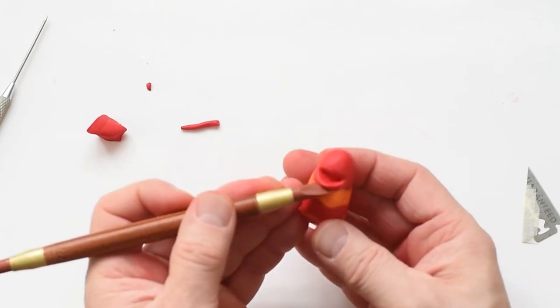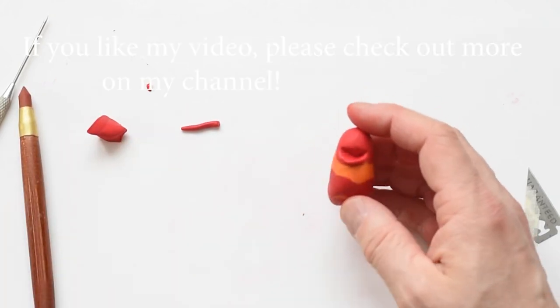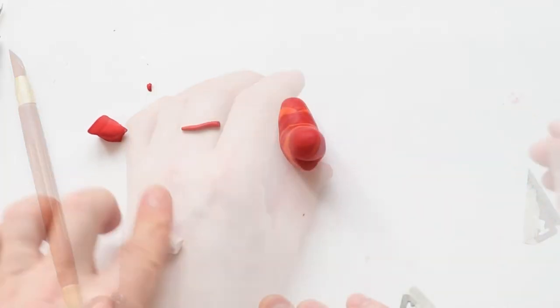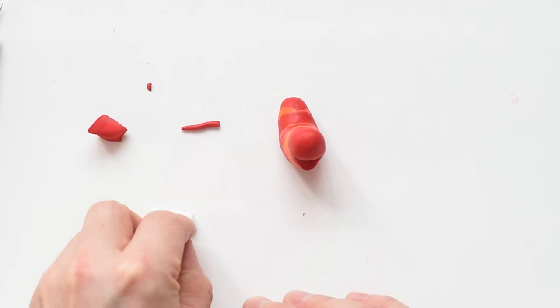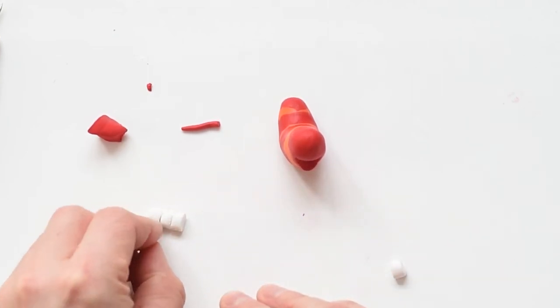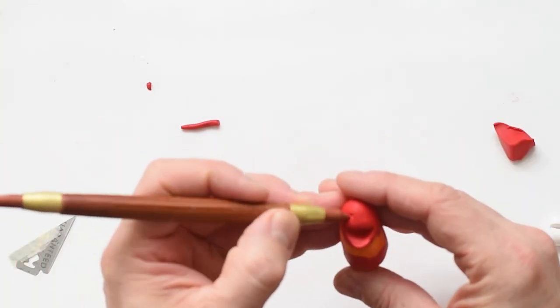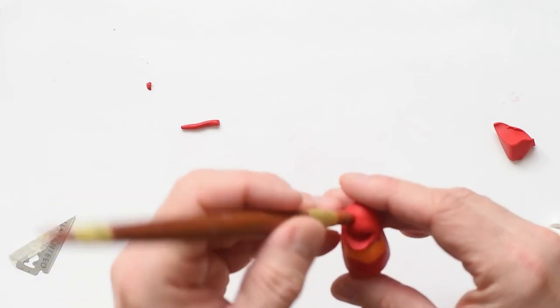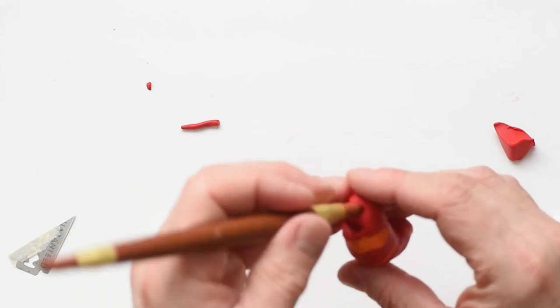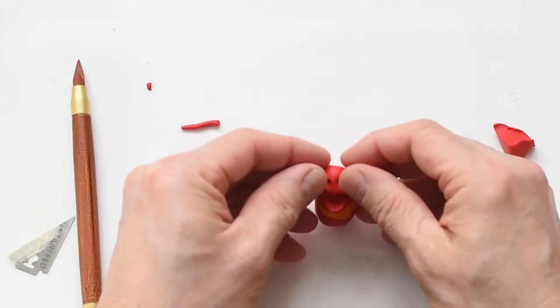The next step is to make the eyes. Before you start with that, please go and wash your fingers, otherwise you get pink eyes. I roll the white, cut it into two pieces of white. This will be the eyes. I make two holes where the eyes should fit. You don't need to do this, but I think it's easier this way. You get a better face.